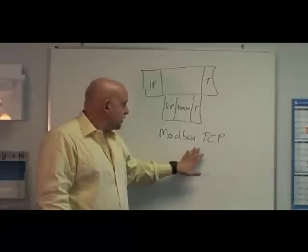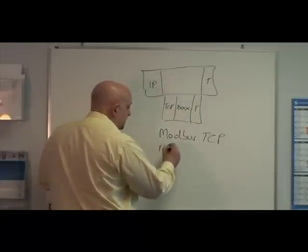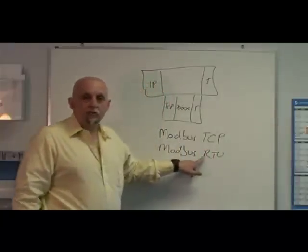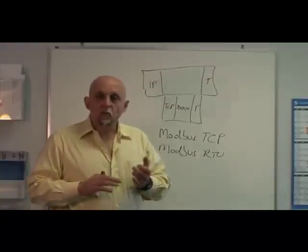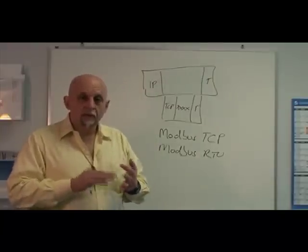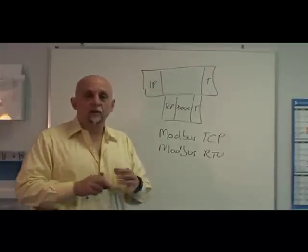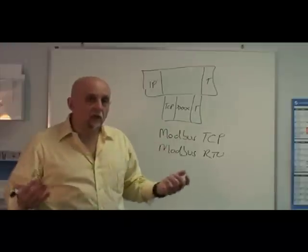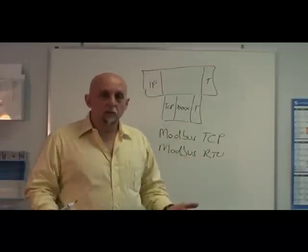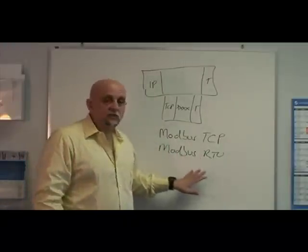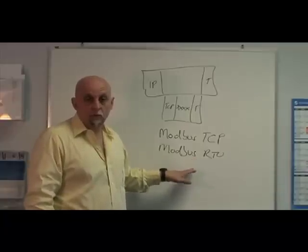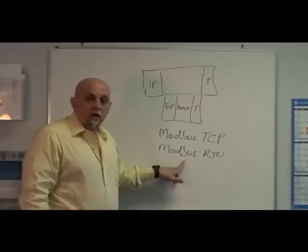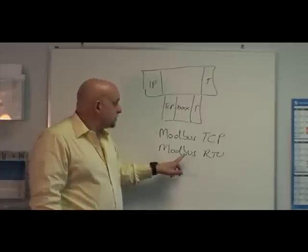Now in the Modbus world, not just Modbus TCP, but Modbus RTU, which is the 485 version of Modbus, data is represented as registers and coils. Registers are simply 16-bit unsigned data values. Coils are single bits. So every device on a network has some number of registers, has some number of bits. You can actually have 64K worth of registers and 64K worth of bits. Most devices don't have that many.